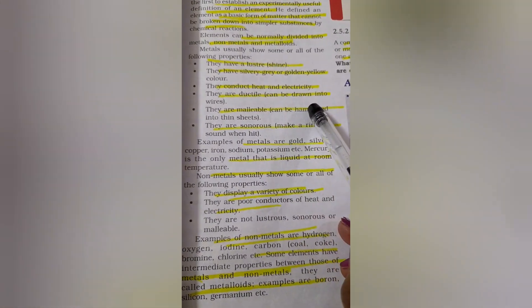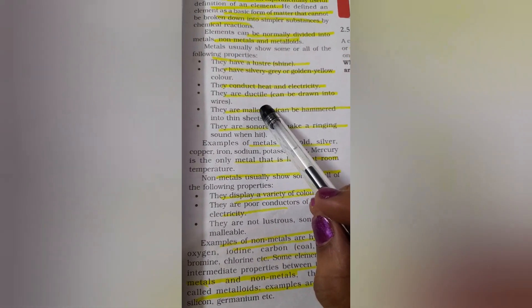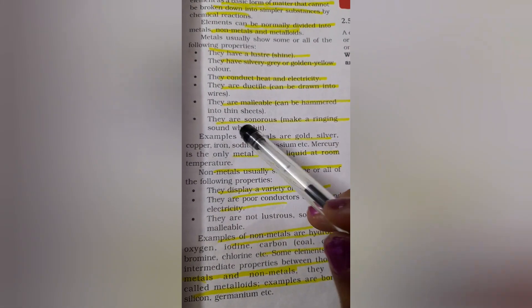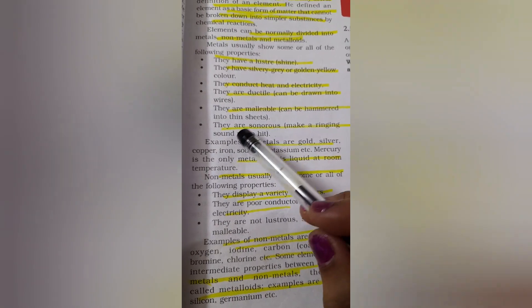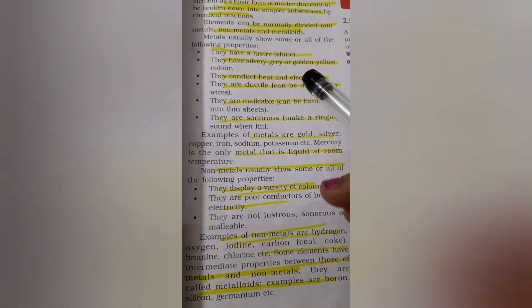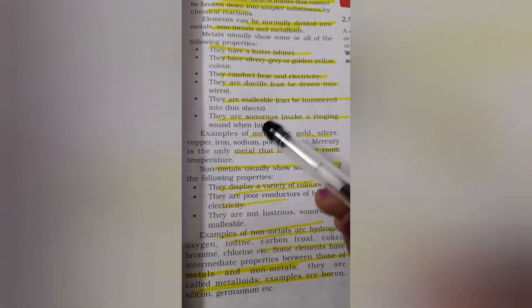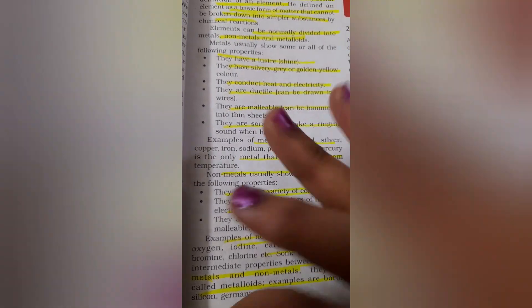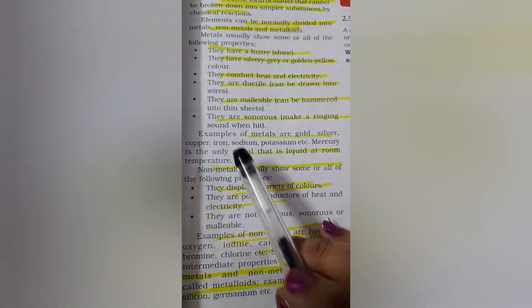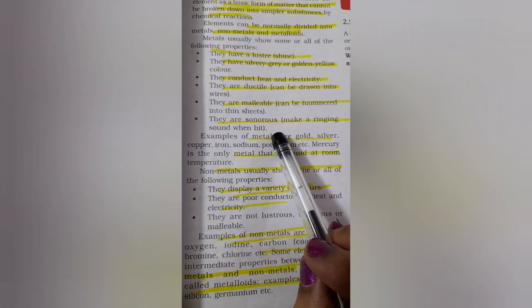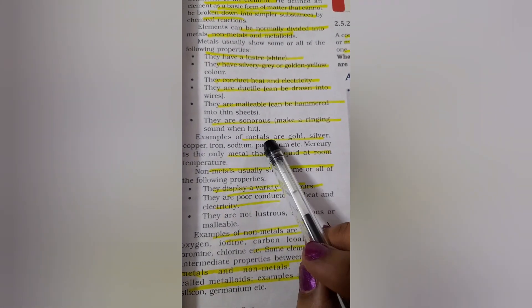They conduct heat and electricity. They are ductile. What is meant by ductility? It can be drawn into thin wires. They can be hammered into very thin sheets, that property is known as malleable. Like gold, you can change it into very thin sheets. Also they make sound when you heat it.